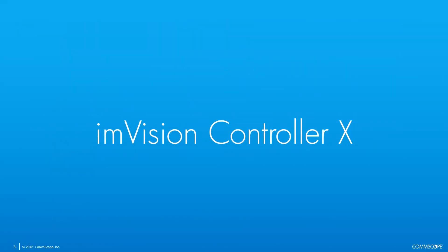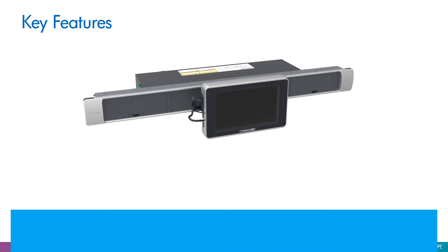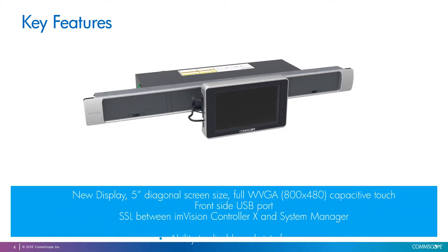We're going to start by reviewing the characteristics and features of the InVision Controller X. Here we have the front view of the new InVision Controller X device. It has a new capacitive touch display that is bigger and has better resolution than the one in the previous controller. The display includes a USB port on the side, which allows easy access to collect logs or, for example, perform a USB firmware update from the front of the rack.